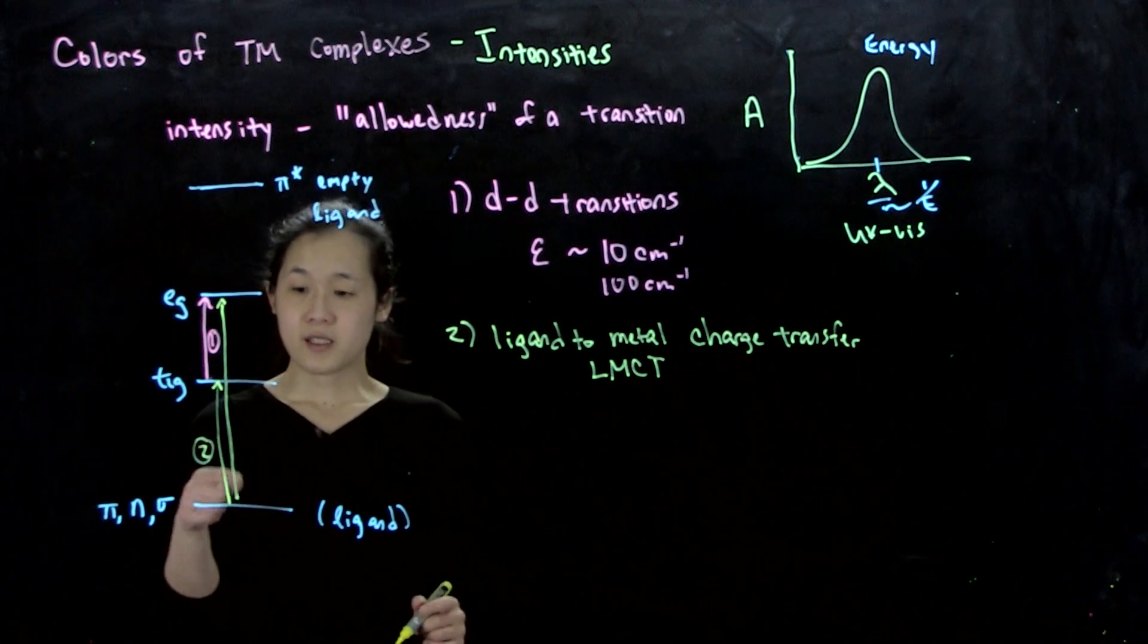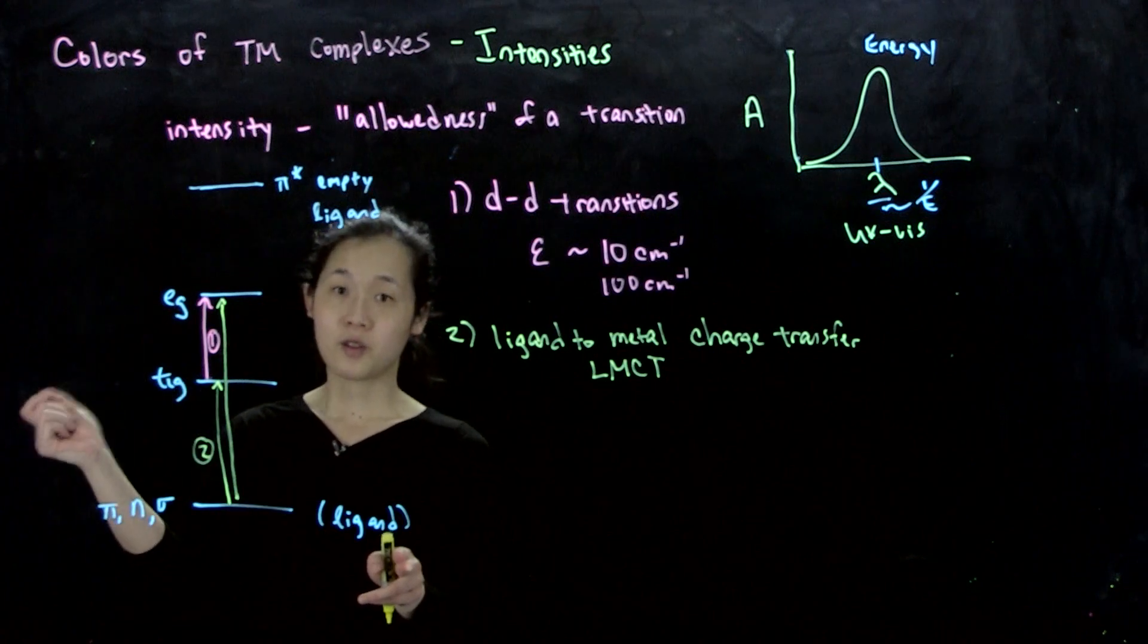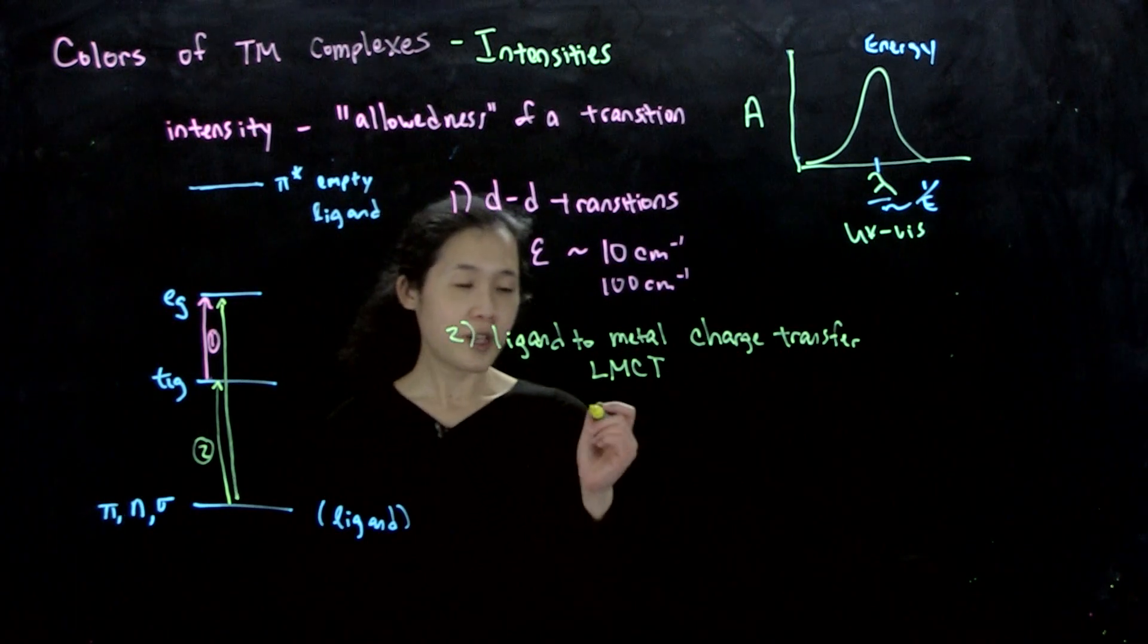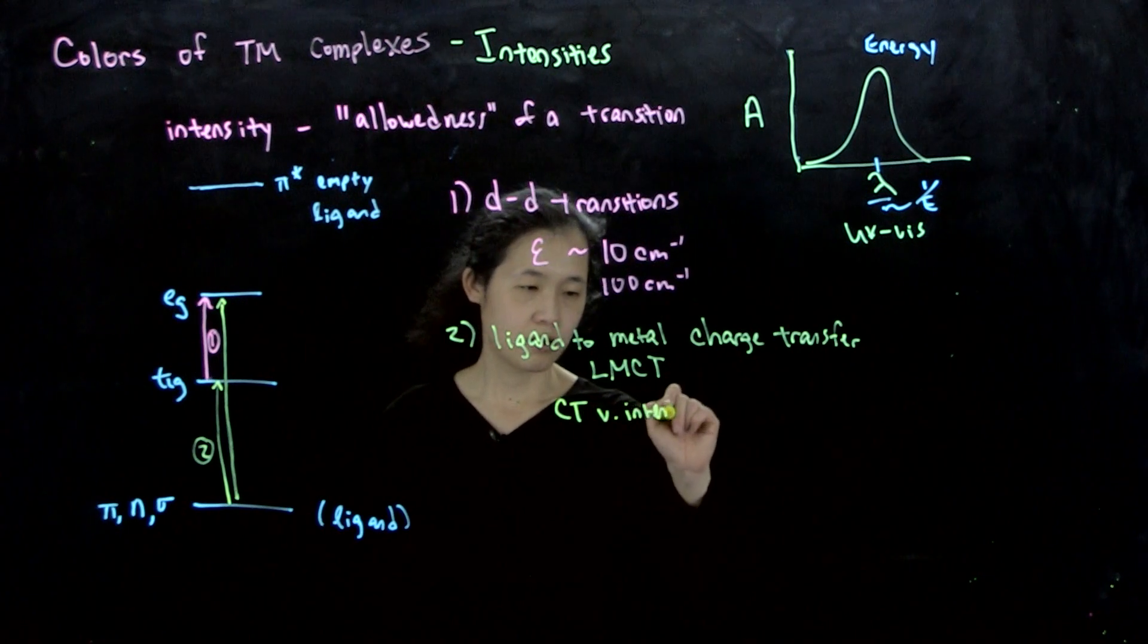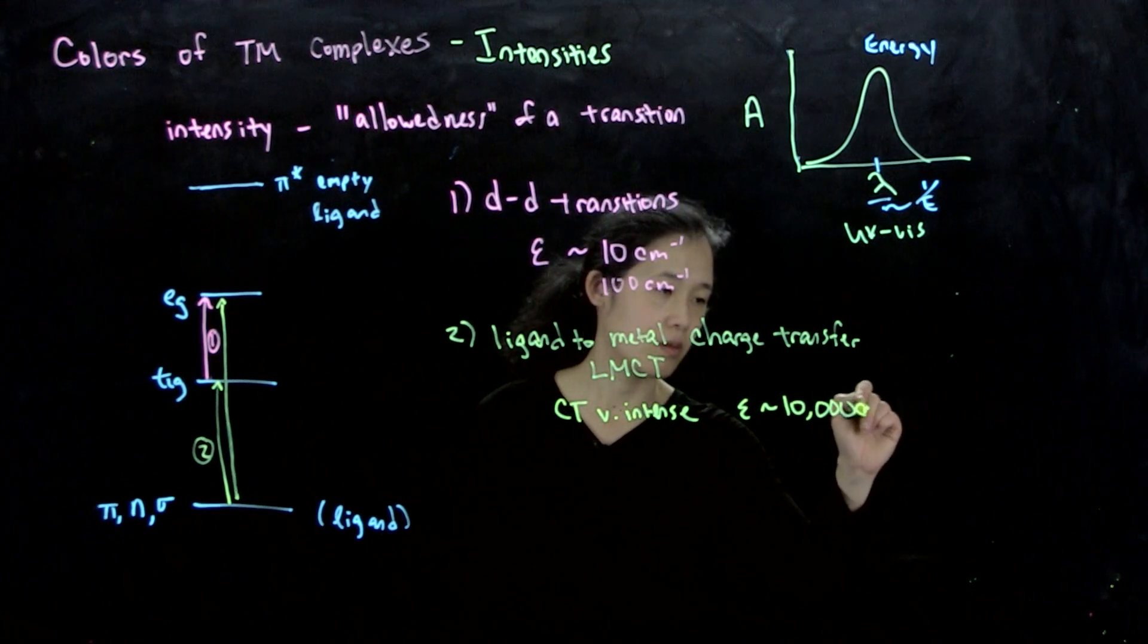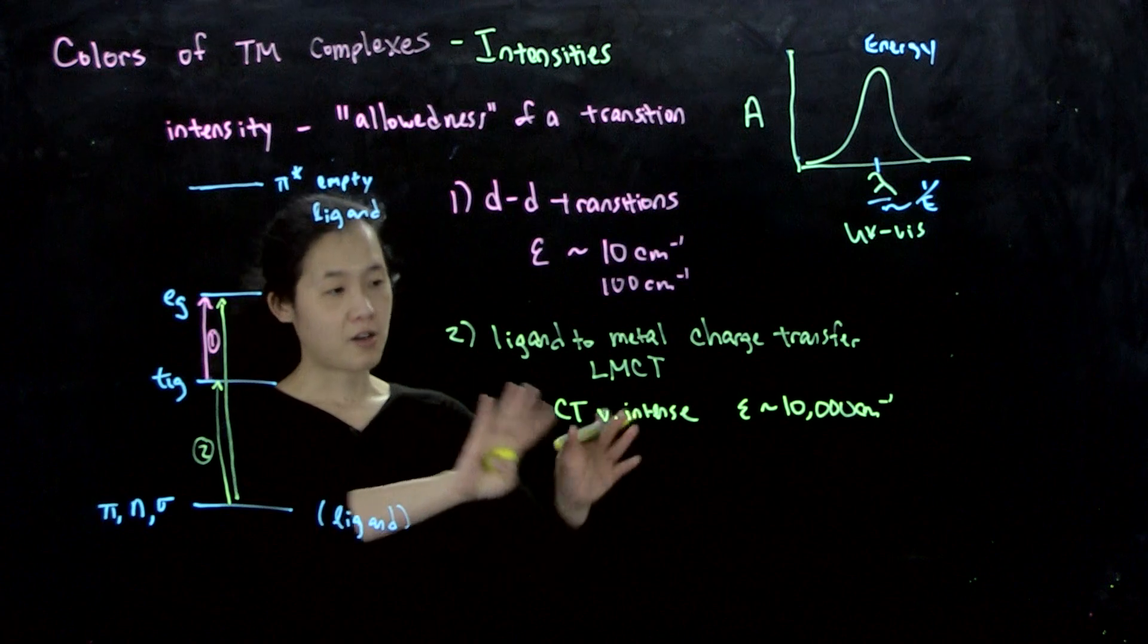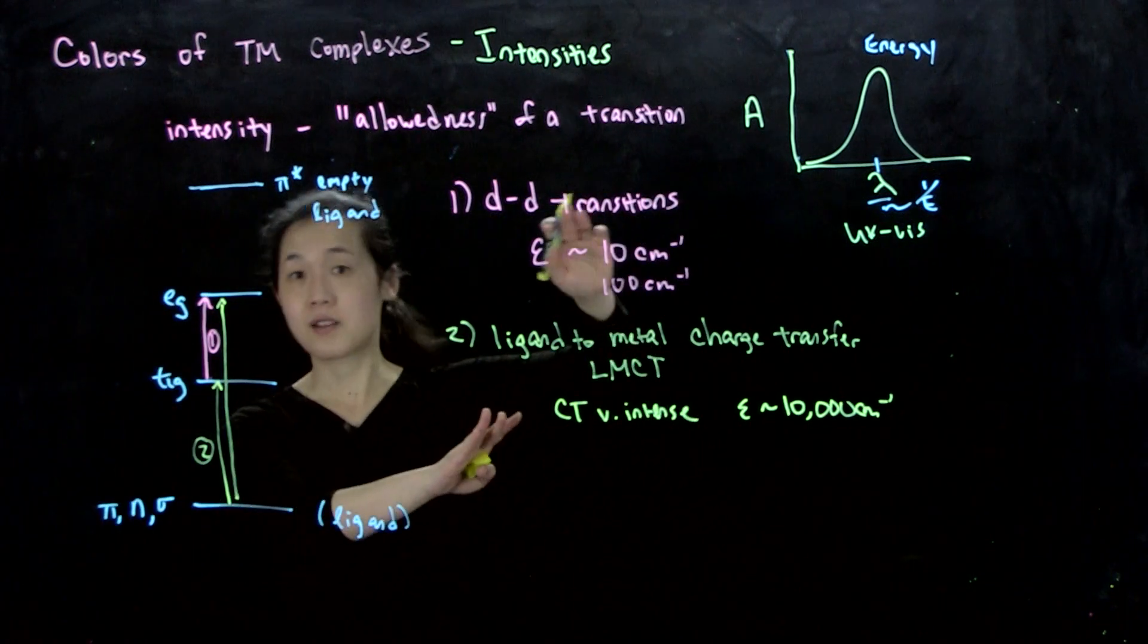And so what's notable about this charge transfer, we say it's charge transfer because we have a ligand-centered electron, and then we're moving it onto a d orbital, so it's metal centered. That's why it's charge transfer, even though they're all within the same complex. So charge transfer transitions are often very intense. So this has to do with the symmetry of the d orbitals, so we're not going to get into that in this class. But just for your purposes, charge transfer transitions, going from ligand-centered orbitals to metal-centered orbitals, are very intense compared to d-d transitions.